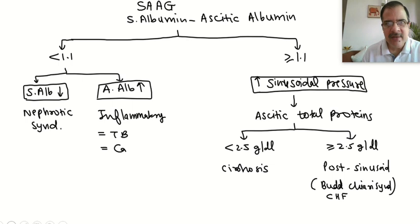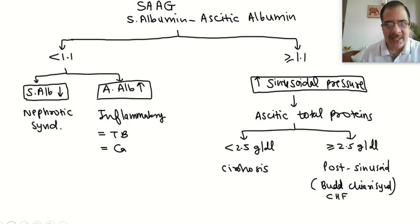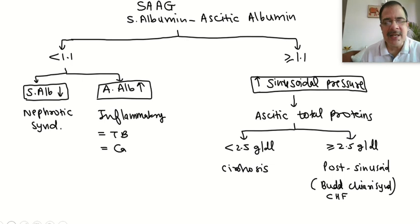Inflammatory causes of SAAG less than 1.1 include tuberculosis, carcinoma, and acute pancreatitis. When the gradient is more than or equal to 1.1, it is because ascitic albumin is low due to high sinusoidal pressures. The sinusoid, if its pressure is increased, leaks fluid into the peritoneum without albumin leakage. As a result, ascitic fluid albumin becomes low — only fluid enters the peritoneal space, diluting the existing albumin and decreasing ascitic albumin, thereby increasing the gradient.